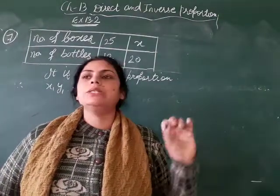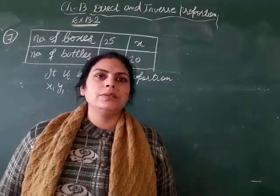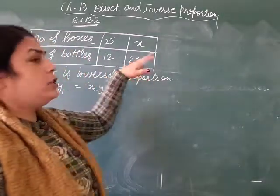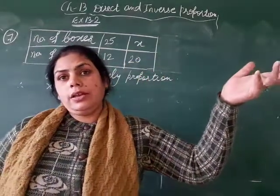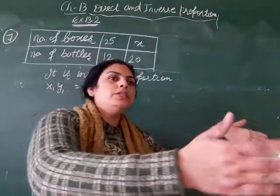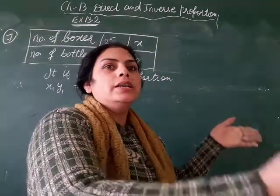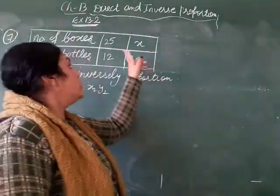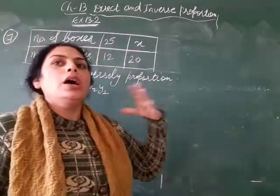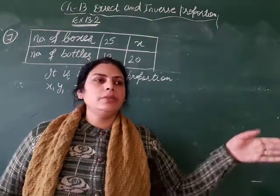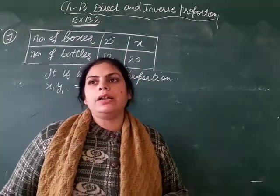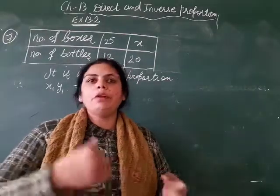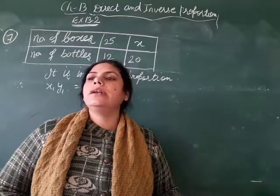If we have 20 bottles in one bag, will our boxes be filled with more or fewer boxes? If bottles are added in more boxes, we will also fill more boxes. Bottles are fixed in each bag. If you put 12 bottles in one box, then you have 25 boxes ready. If you put 20 bottles in each box, then you will fill fewer boxes. The number of bottles increased, so the number of boxes decreased.